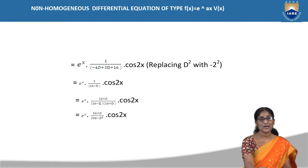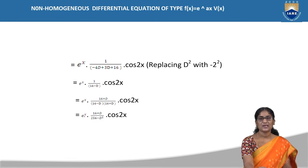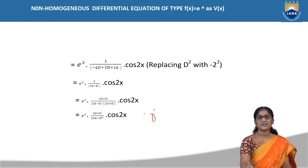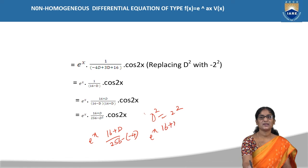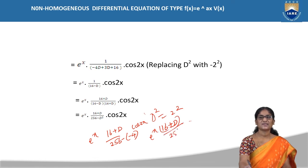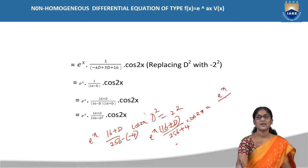So we get e^x into (16 + D)/(256 - D²) into cos2x. Don't forget to carry the exponential throughout the solution. Substituting D² = -4 again: 256 - (-4) = 256 + 4 = 260. This gives e^x into (16 + D)/260 into cos2x, which can be written as e^x/260 into (16 + D) · cos2x.